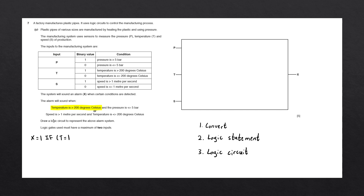X is going to be set to 1 — the alarm will sound when T is equal to 1. We then have AND. Whenever we see the keywords AND or ALL, we're always going to write the logic gate AND. The next part says the pressure is less than or equal to 5 bar. Looking in our table, when the pressure is less than or equal to 5 bar, that is going to set the binary value of P to be 0. So we're going to write down when P is equal to 0. Let's close the brackets because we're now at the end of the line.